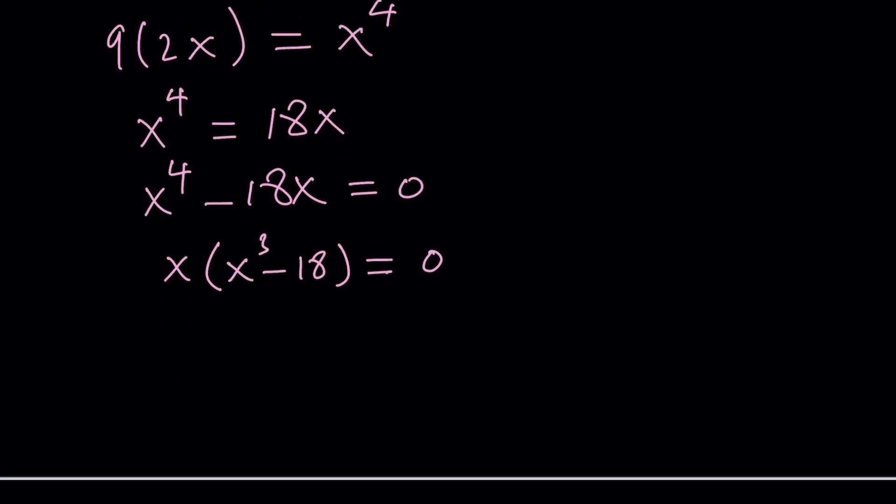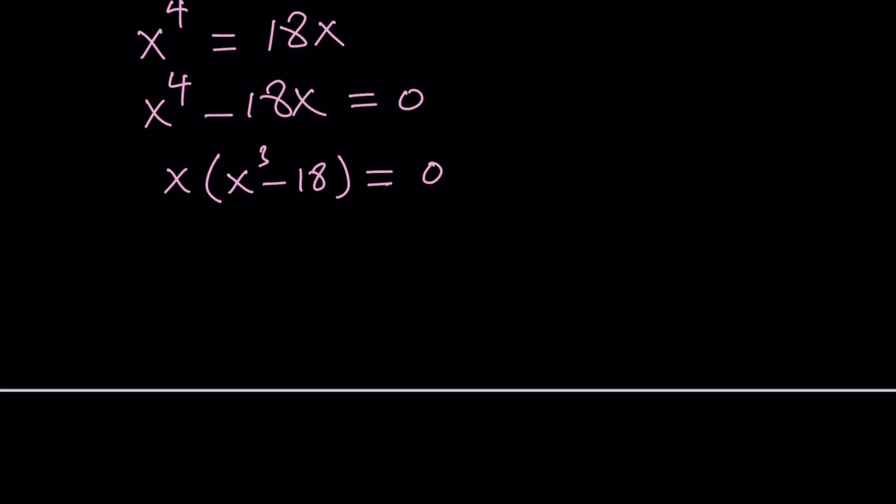And from here we get two solutions. What are they? They are 0 and cube root of 18. If you set x cubed equals 18, you get x equals cube root of 18. We're looking for a positive answer. We're looking for a real solution and they are both real. But wait a minute.